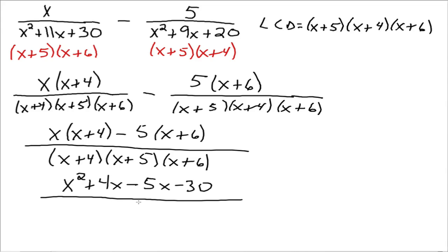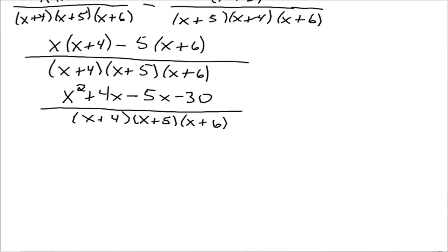All over our LCD again. Okay. Now what can we do in the numerator? What does that go to? x squared minus x minus 30 all over our LCD, which I know you guys are getting tired of writing. But that's just the way it goes. Math's not always done in just two steps.